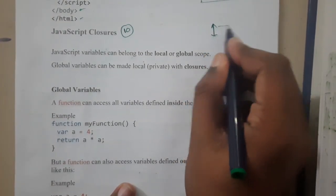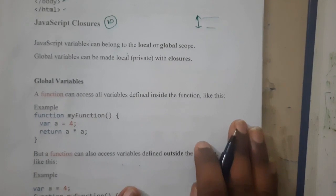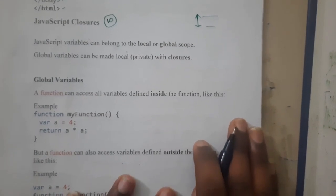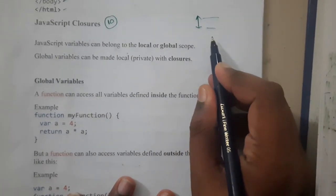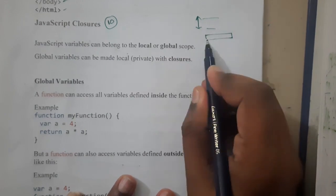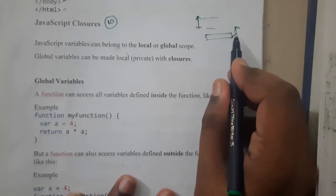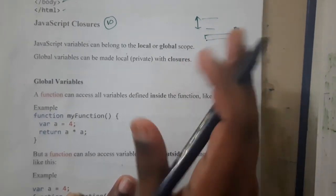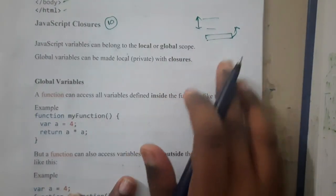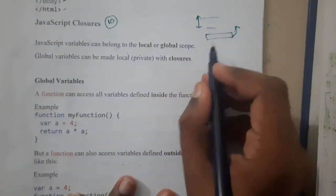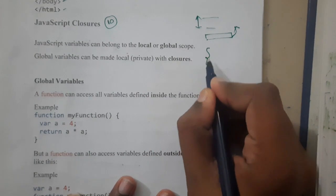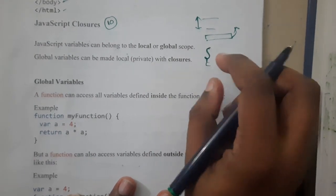I'll be just giving you an overview of this topic. A variable which is defined outside the main or in the exterior part of the code will be the global variable, whereas a local variable is defined within a function or locally for temporary use.